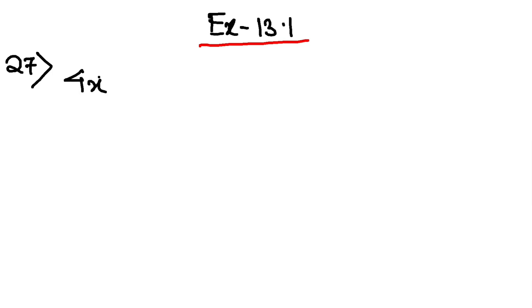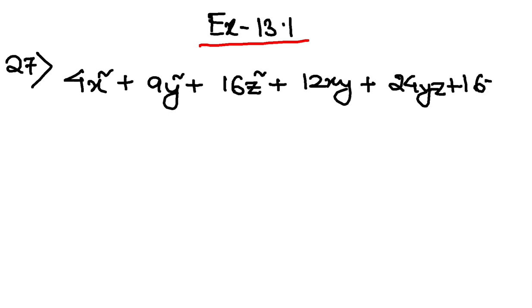So 27 is 4x squared plus 9y squared plus 16z squared plus 12xy plus 24yz plus 16zx. Okay, this is the question.